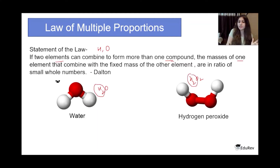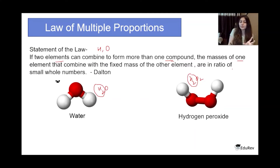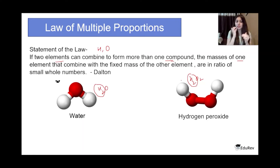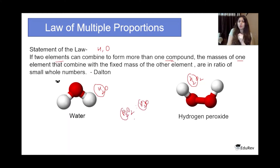H₂O and H₂O₂ have H₂ in common — two atoms of hydrogen are the fixed mass. The other element is oxygen. Comparing H₂O₂ versus H₂O, with the fixed mass being hydrogen, the ratio of oxygen atoms is 2:1. This law is basically saying it cannot be 2.5:1 or 1.5:1 — it will always be 2:1, a simple whole number ratio, no matter what.